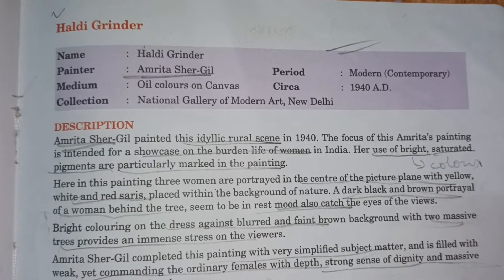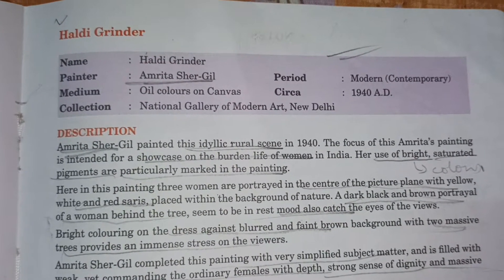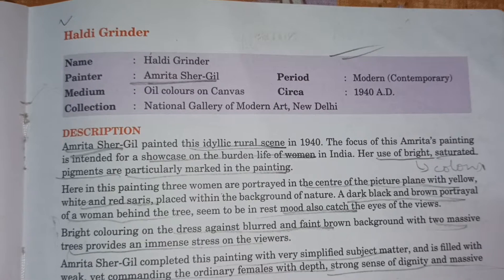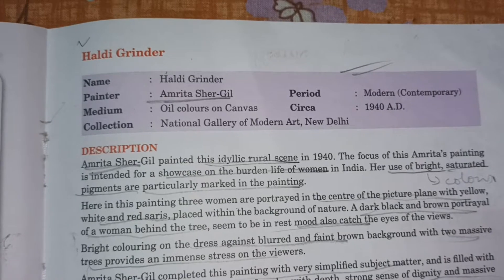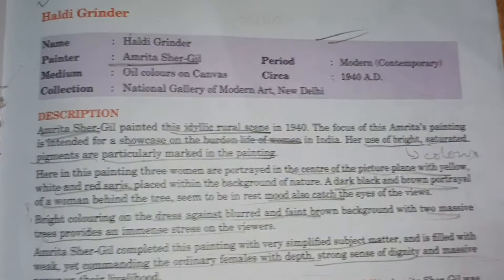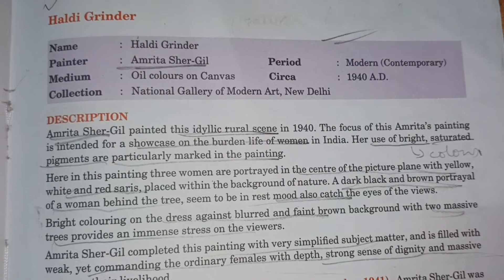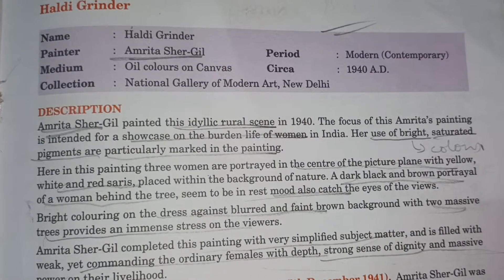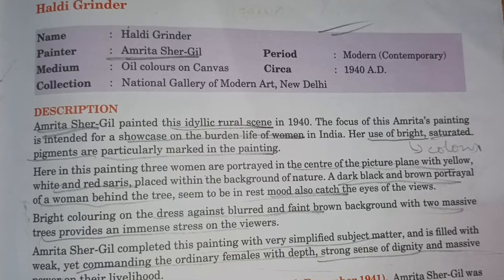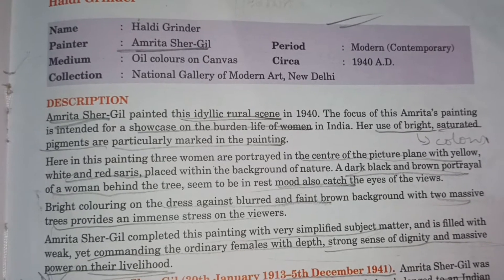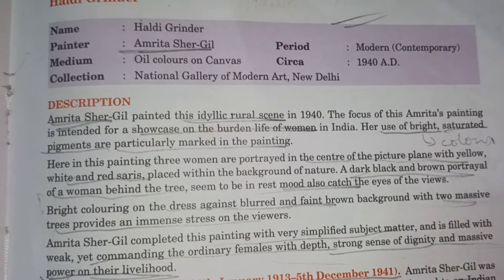Hello and welcome to Intelligent Education System. Today we are going to study the painting 'Haldi Grinders' for Class 12, under the chapter on paintings of contemporary modern Indian artists. The name of the painting is 'Haldi Grinders,' painted by Amrita Shergil. Medium: oil color on canvas. Collection: National Gallery of Modern Art, New Delhi. Period: Modern Contemporary, 1940.